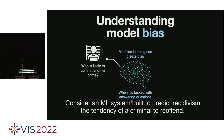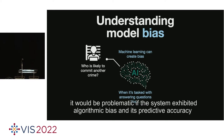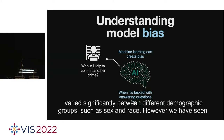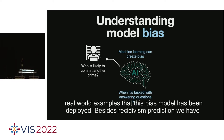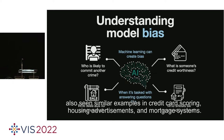Without proper model auditing and validation, we risk encoding prejudicial biases into our models and deploying systems in the real world that can cause serious harm to people. Consider an ML system built to predict recidivism, the tendency of a criminal to reoffend. Even if such a system demonstrated high overall accuracy, it would be problematic if the system exhibited algorithmic bias and its predictive accuracy varied significantly between different demographic groups such as sex and race. We have also seen similar examples in credit card scoring, housing advertisements, and mortgage systems.